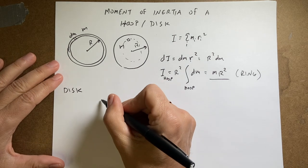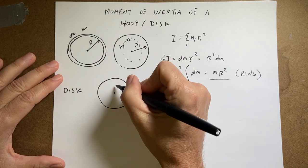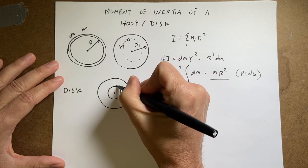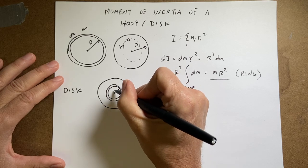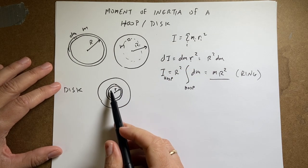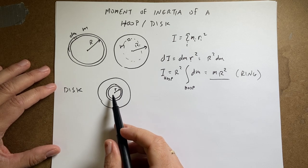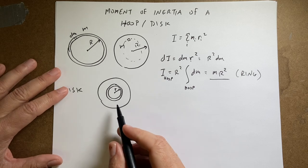So let me rewrite my disk. It has a radius r, but I'm going to break it into hoops. Radius r. So if I, let's consider this a bunch of hoops, then I can calculate the moment of inertia due to each hoop and just add those up. So let's do that.